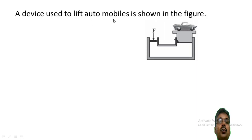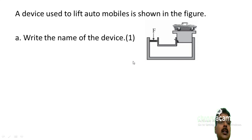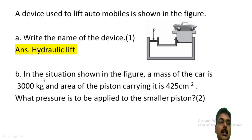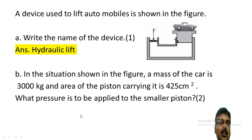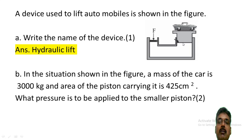The device used to lift automobiles is shown in the figure. Write the name of the device. This device is a hydraulic lift. In the situation shown in the figure, the mass of the car is 3000 kg and the area of the piston carrying it is 425 cm squared. What is the pressure to be applied to the smaller piston?